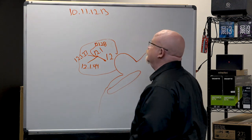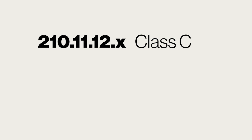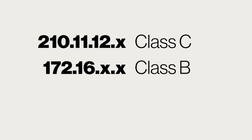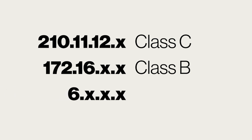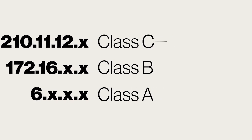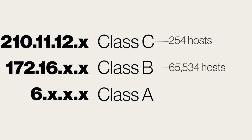You always came down from on high and got yourself a block of addresses. Any block where the first three numbers are fixed and you can do anything with the fourth — we call that a Class C. If the first two numbers are locked, it's a Class B. If only the first number is locked and you get to do whatever you want with the last three, we call it a Class A. A Class C gives you 254 hosts. A Class B gives you about 65,534. A Class A is in the millions.